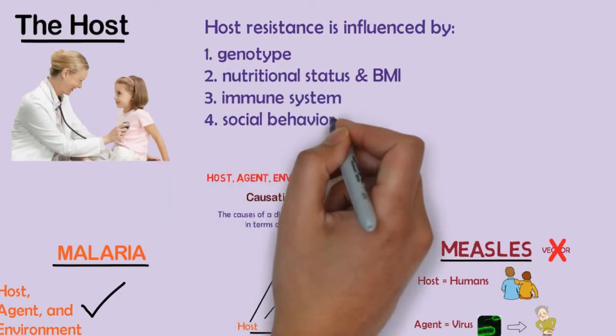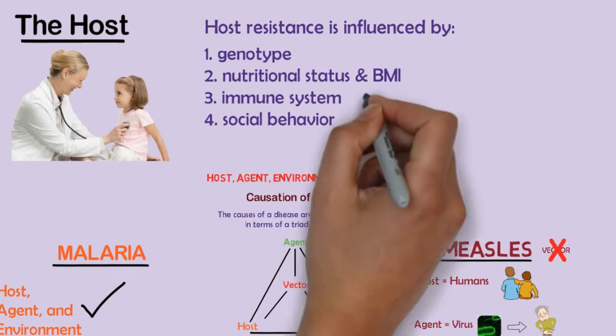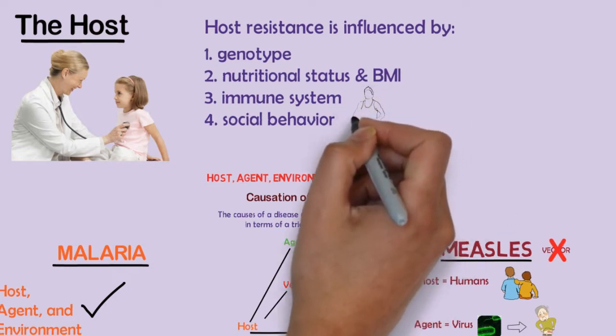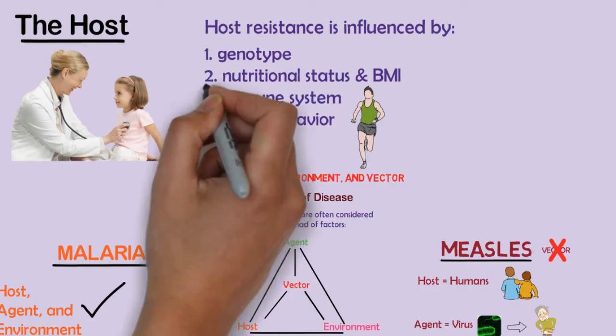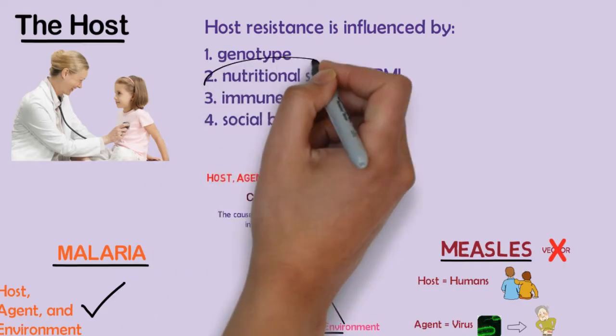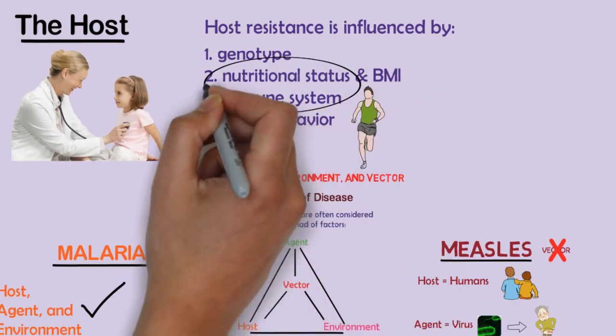Host resistance is also influenced by the immune system — for example, compromised immunity reduces resistance to cancer as well as microbial disease — and social behavior — for example, physical exercise enhances resistance to many diseases, including depression. Several factors can work synergistically, such as nutrition and immune status.